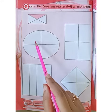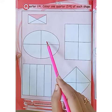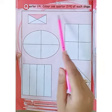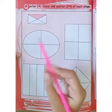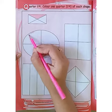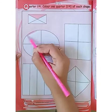This is an oval shape and it has four parts: one, two, three, four. We have to color one quarter of this shape. So color it. Color the quarter of this shape.